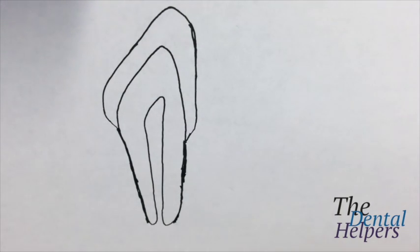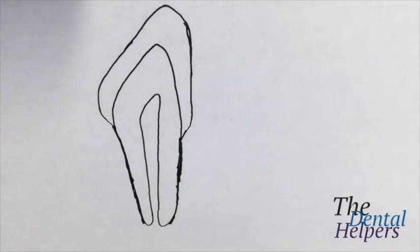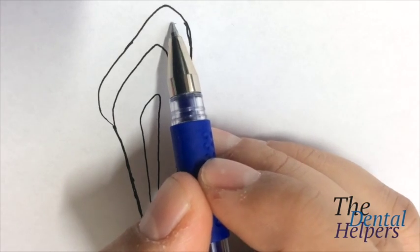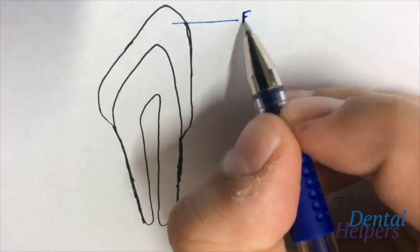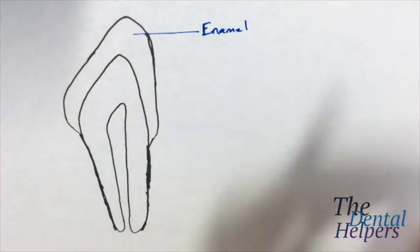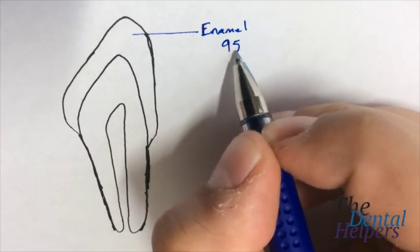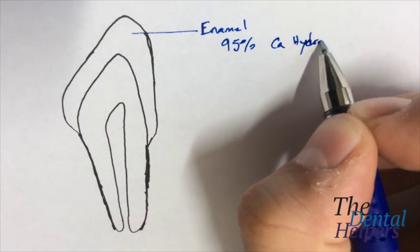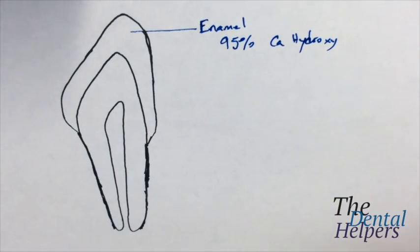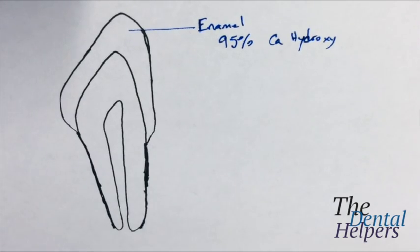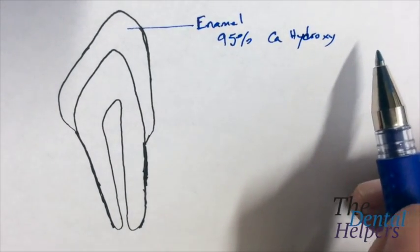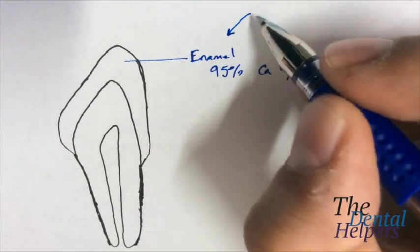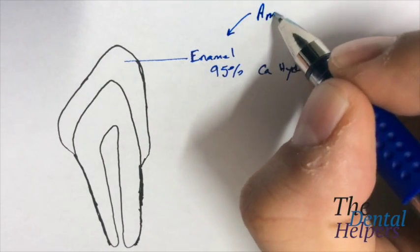So let's do the breakdown. This outside area, which you guys probably have heard of, is the enamel. And what you need to know about the enamel is that it's 95% calcium hydroxyapatite and 5% water. Ameloblasts are what are going to give rise to the enamel.